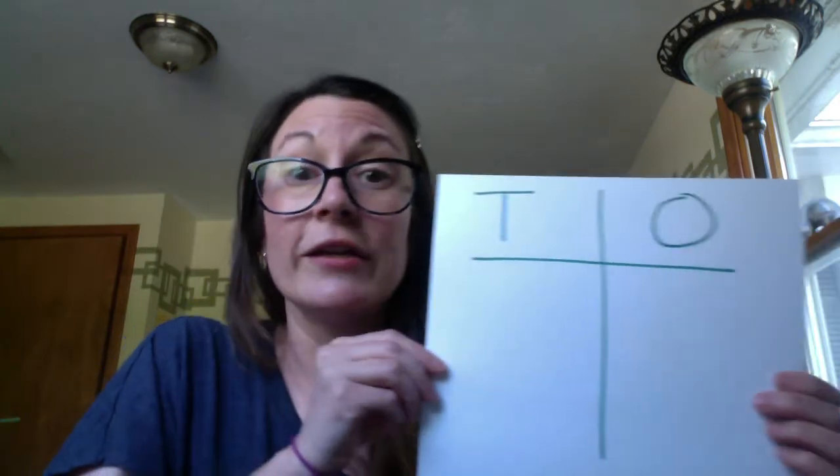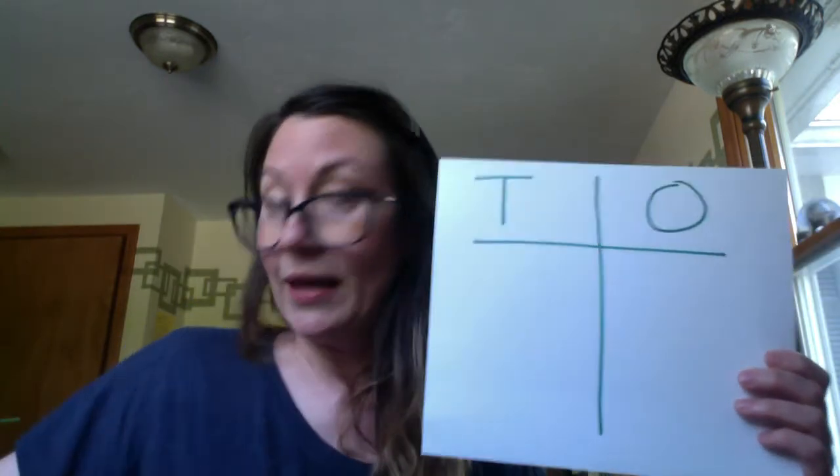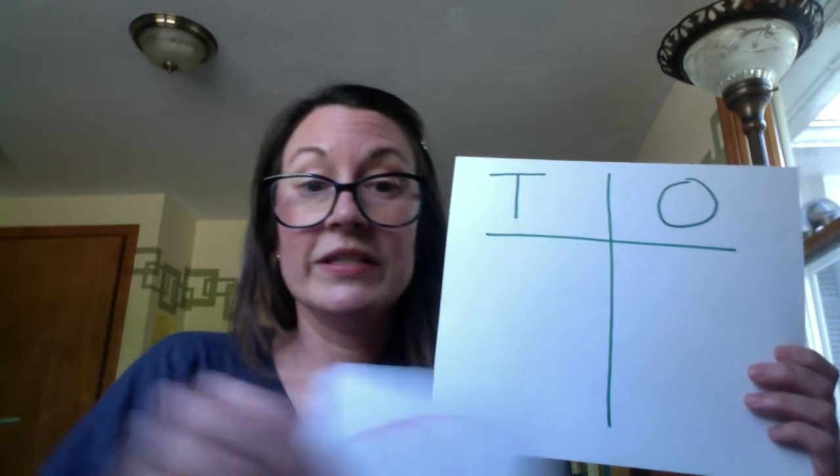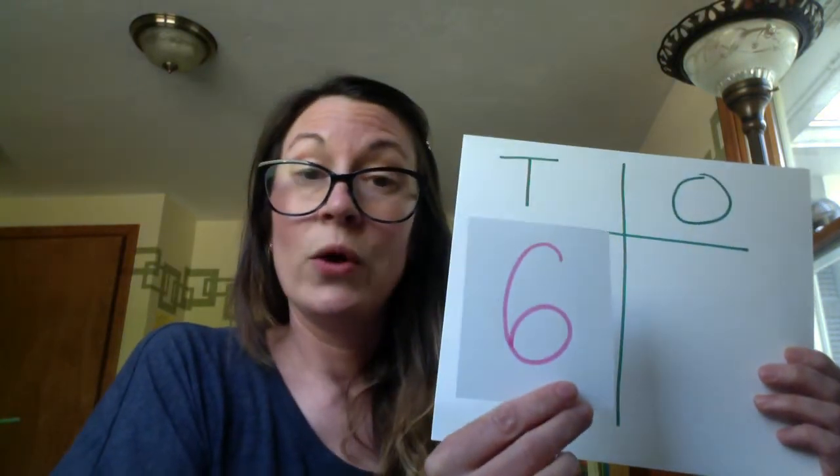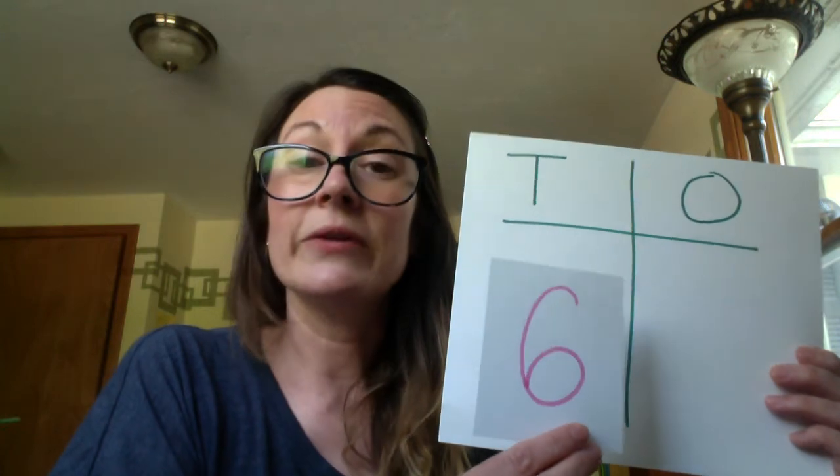Place value! That just means that the place of a digit gives it its value. So here I'm going to use my good old TNO chart and the digit six. Where I put the six — the place — tells me how much it is, or its value.